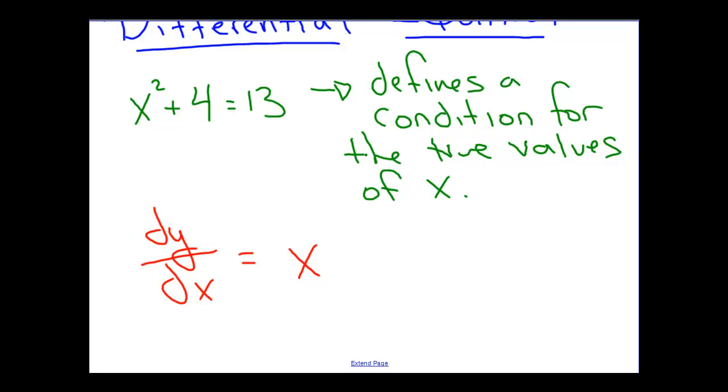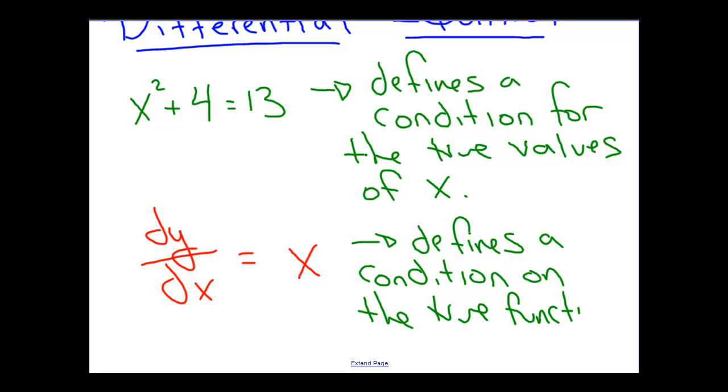And so what are we looking for here? We're no longer looking for x. X remains a variable here. What this does is this defines a condition on the true functions y. What this is is a rule that tells us how to structure our function y in such a way that it is true or that it meets the condition that we have proposed here.